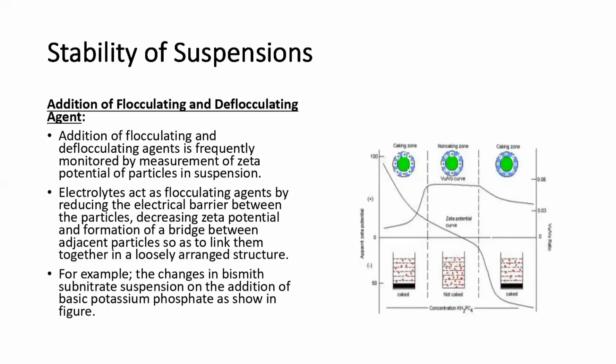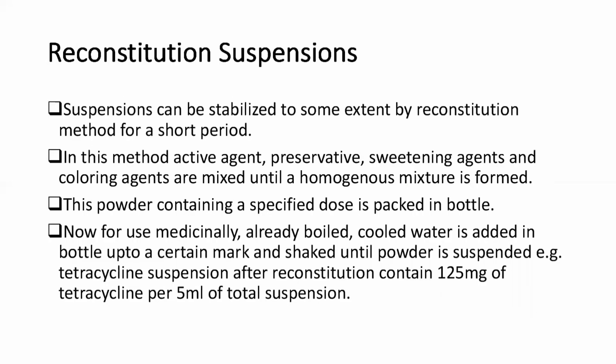Addition of flocculating and deflocculating agents is frequently used to control suspension stability, monitored by measuring the zeta potential of the particles. Electrolytes act as flocculating agents by reducing the electrical barrier between particles. When the electrical barrier is reduced, the zeta potential is reduced and bridges form between adjacent particles, linking them together in a closely arranged structure.